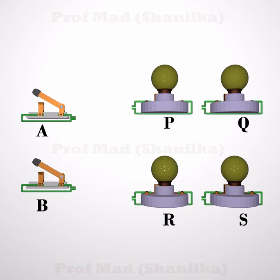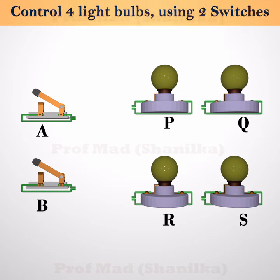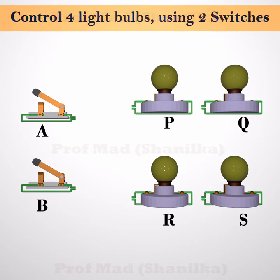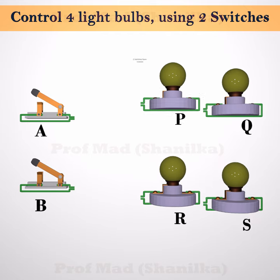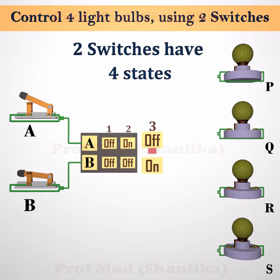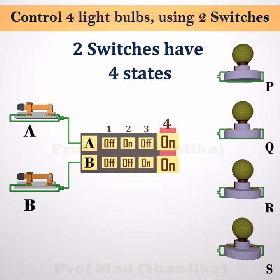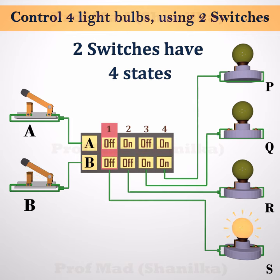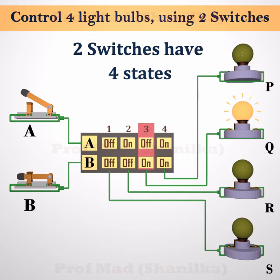We have two switches and four light bulbs. We need to switch on each light bulb individually using these two switches. Two switches have four combinations or states, and we can build a system to turn on one light bulb for just one combination.